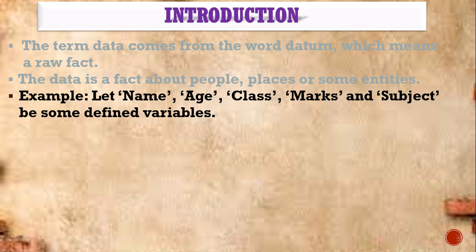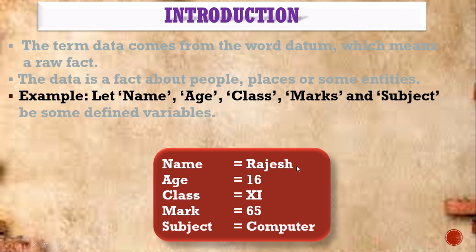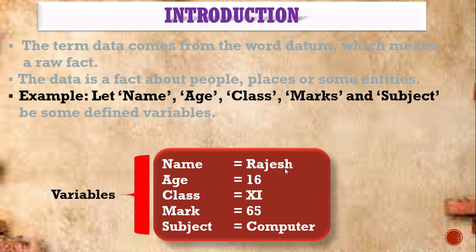Let's see an example of how to store data in variables. Here, name, age, class, mark, and subject — all these are called variables. In these variables, we are going to store the data. What data are we going to store? Rajesh, 16, 11, 65, Computer — these are all called data. Data doesn't have any meaning at all; it is just details about some people, places, or entities.